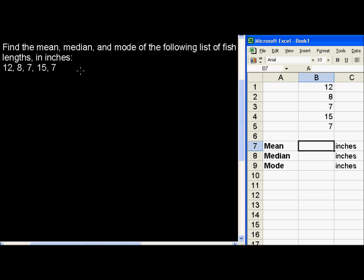Find the mean, median, and mode of the following list of fish lengths in inches. We have 12, 8, 7, 15, and 7 inches.